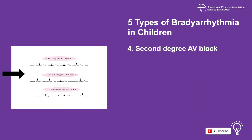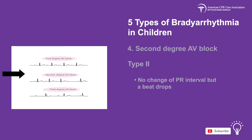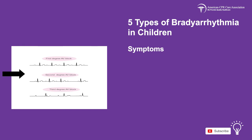In second-degree AV block type 2, there is no change in the PR interval, but a beat will drop randomly. Symptoms may include an irregular heartbeat, lightheadedness, or fainting.